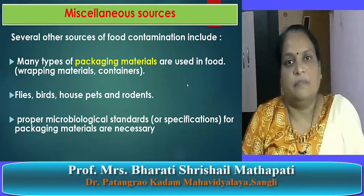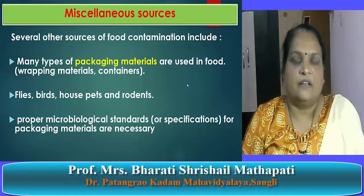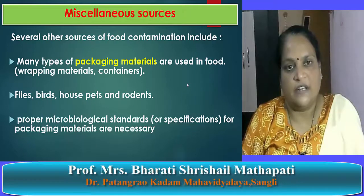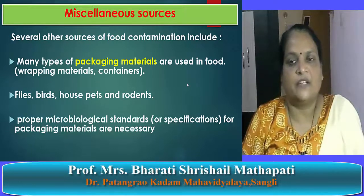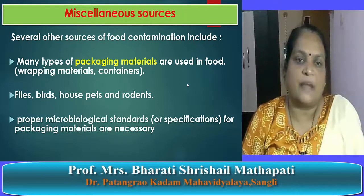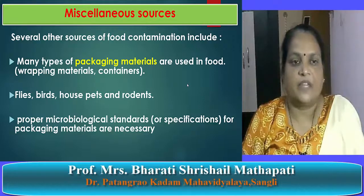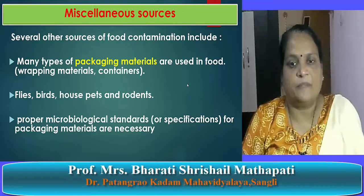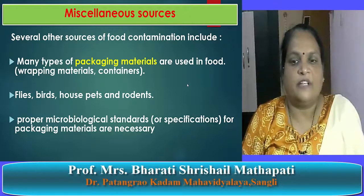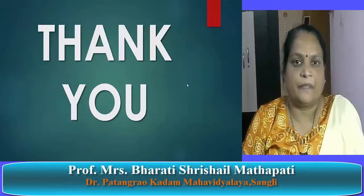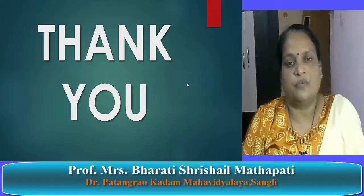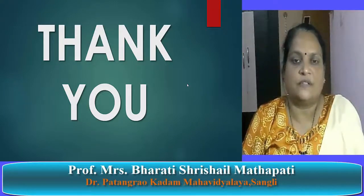Now we will discuss miscellaneous sources. Several other sources of food contamination include many types of packaging materials used in food, such as wrapping materials or containers, as well as flies, birds, house pets, and rodents. Proper microbial standards or specifications for packaging materials are necessary to prevent contamination of food from packaging materials. This covers the sources of microorganisms to the food. I hope all of you understood these sources. Thank you very much.